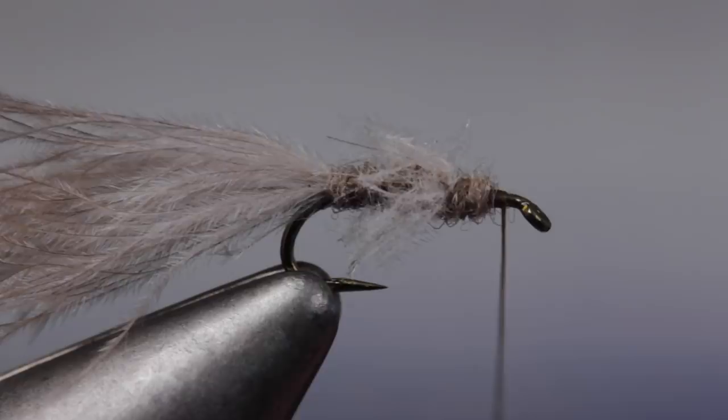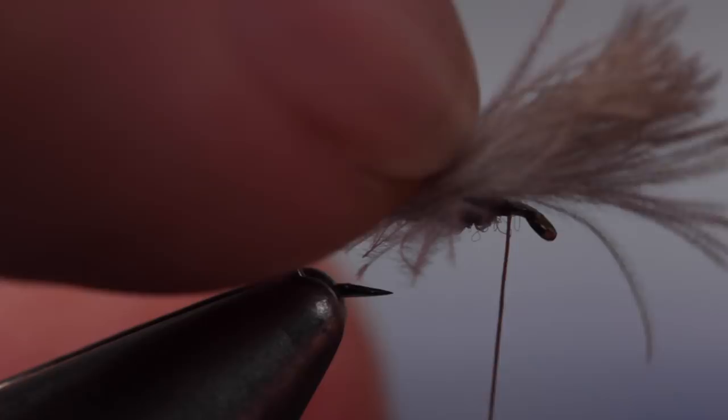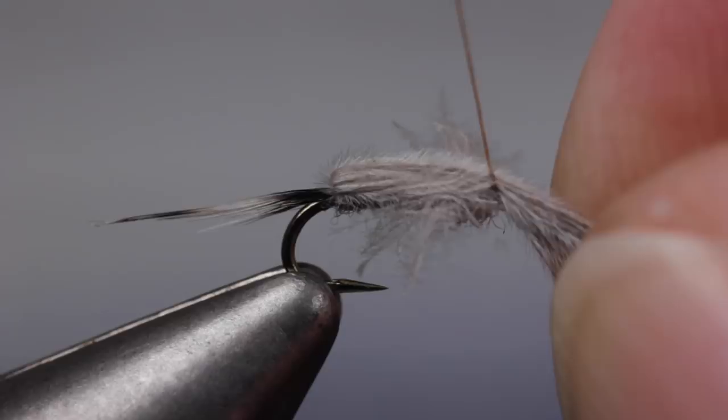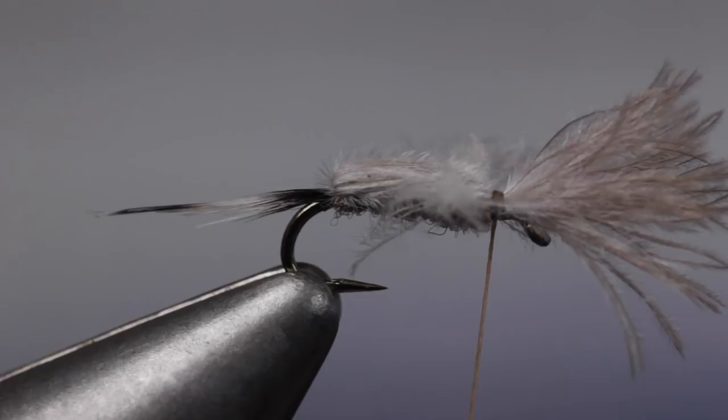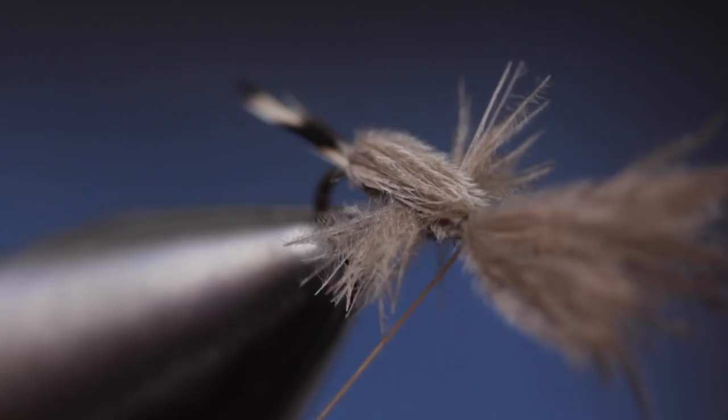With the wings split to either side, pull the tips of the CDC forward out over the hook eye to form the back or wing case of the fly. Bind the fibers down in front of the wings with a few tight turns of tying thread.